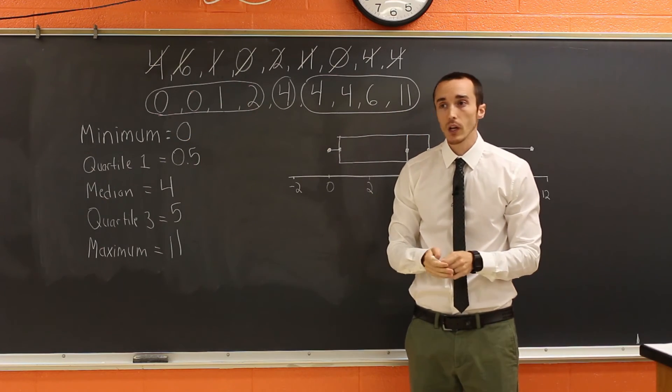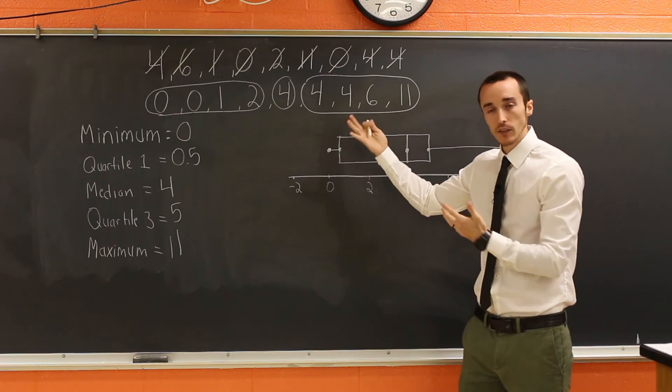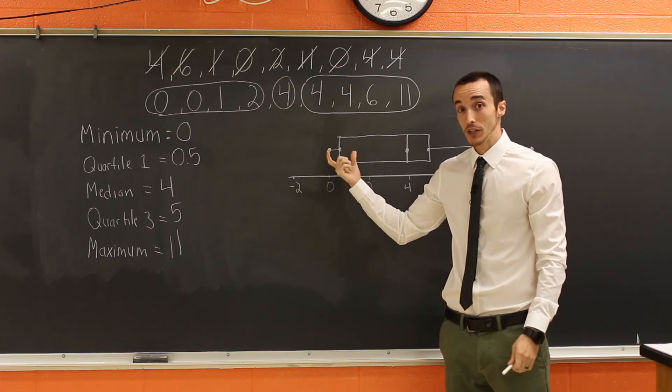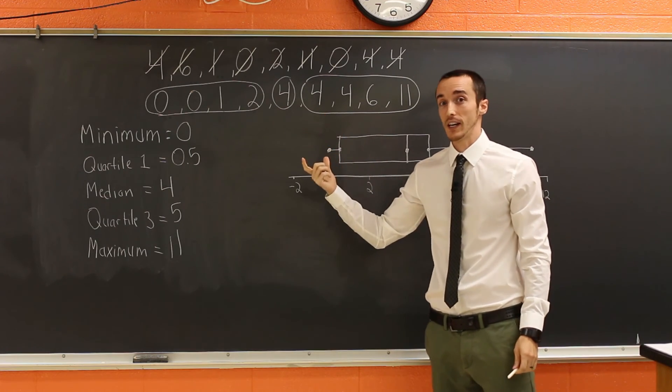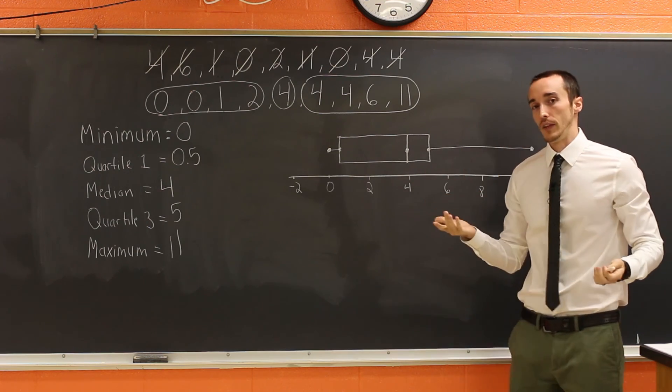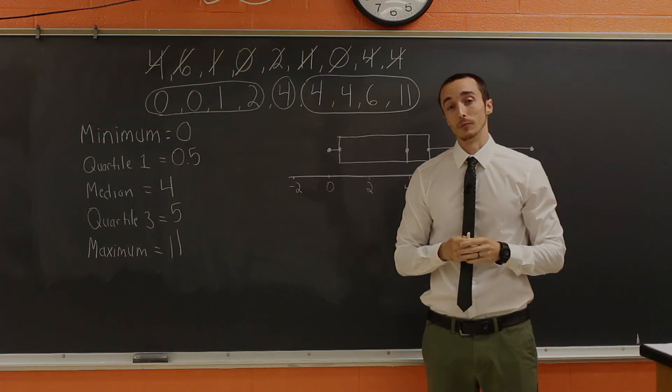Well, why is that useful? It depends, of course, on what your data represents. In this case, if it's talking about breakups, well, you're just talking about, well, there's a higher concentration of students that don't have a lot of breakups. And then there's kind of wildly different results on the upper end. So that, ladies and gentlemen, is how we make a box and whisker plot.